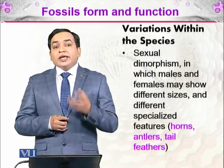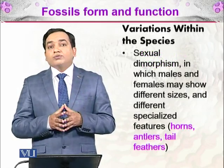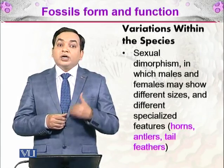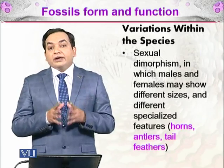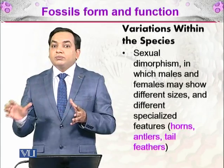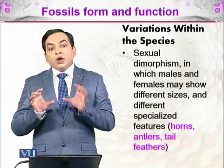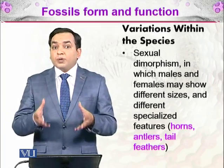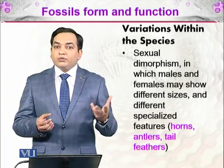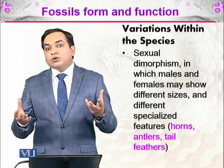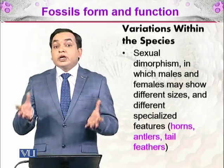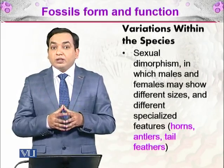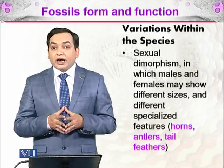The next type of variation within a species is sexual dimorphism. 'Sexual' refers to genders — male and female — and 'di-morphism' refers to different structures or appearances. Males and females have different appearances. The common example already discussed is the peacock: the male is very beautiful with excellent plumage, while the female is less so but still important. These differences can be seen in fossils as well.